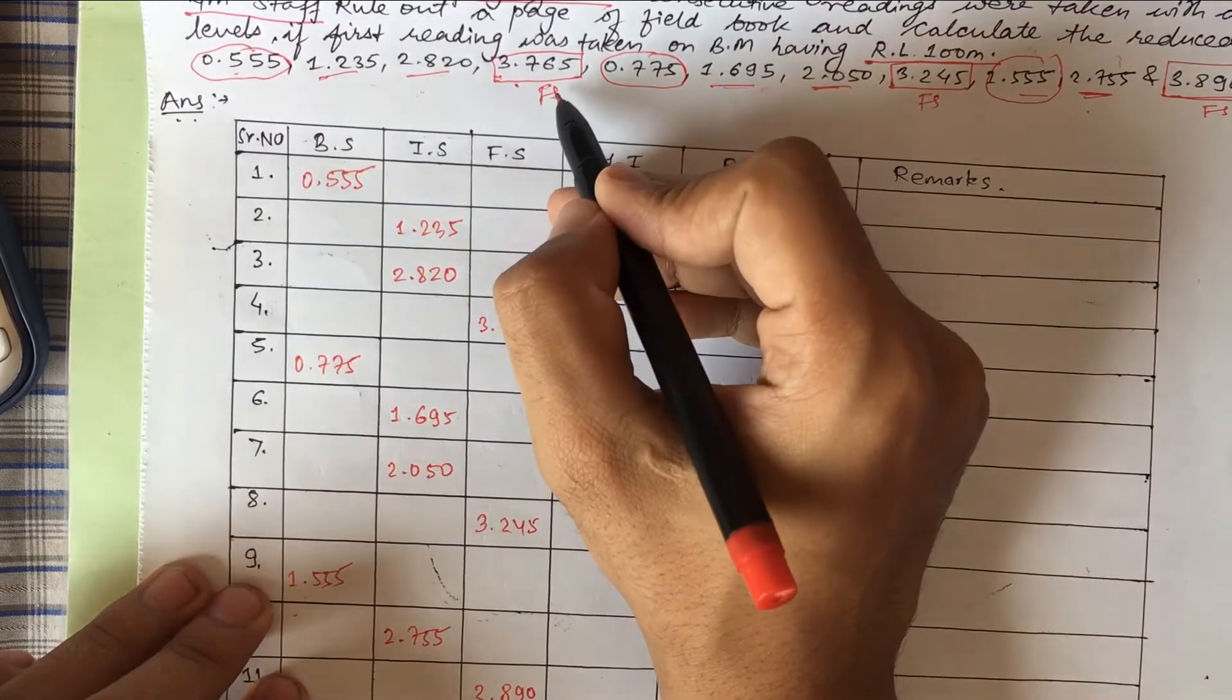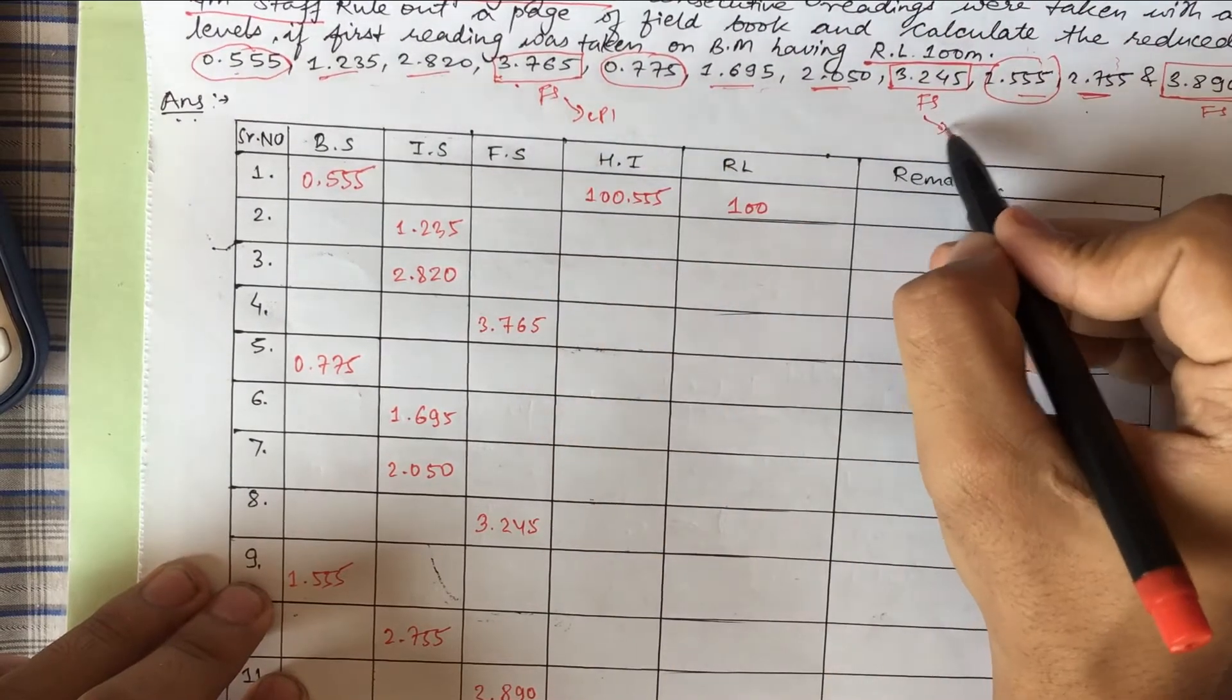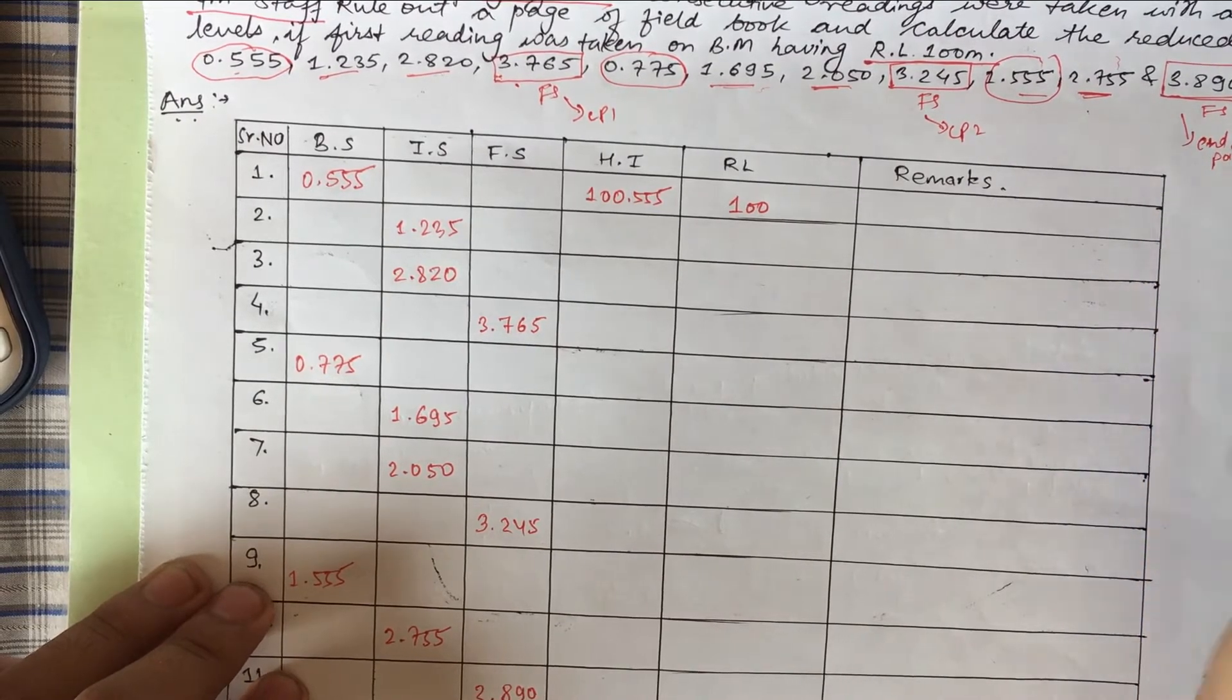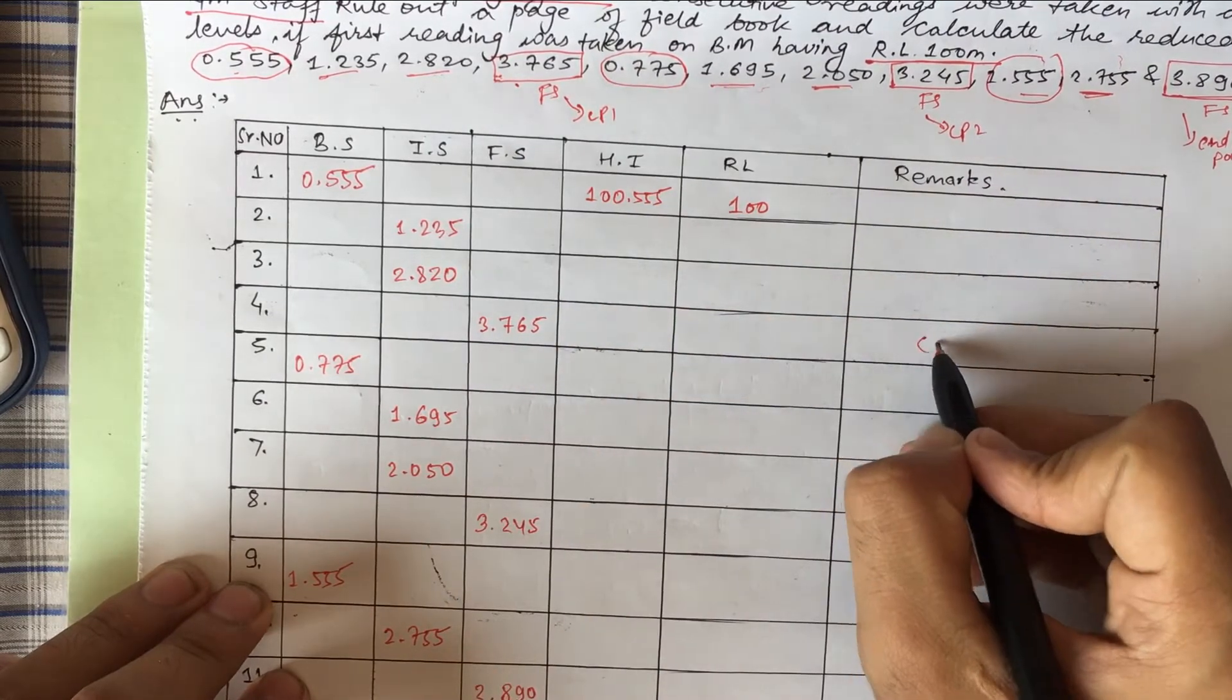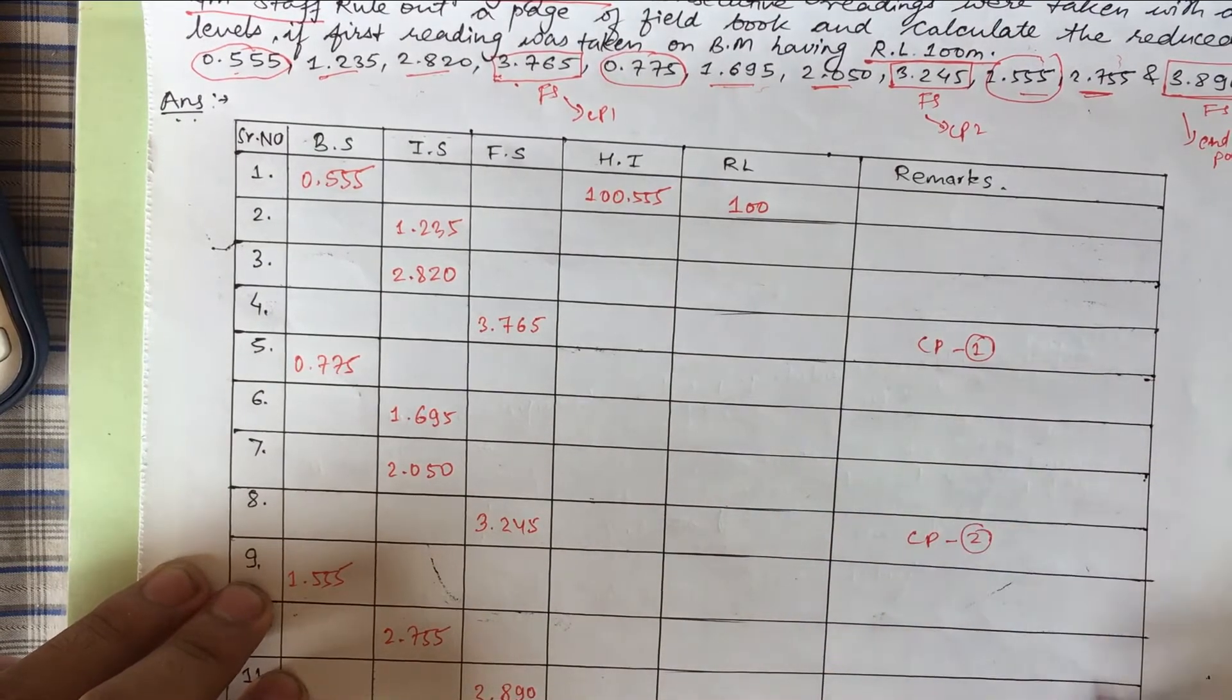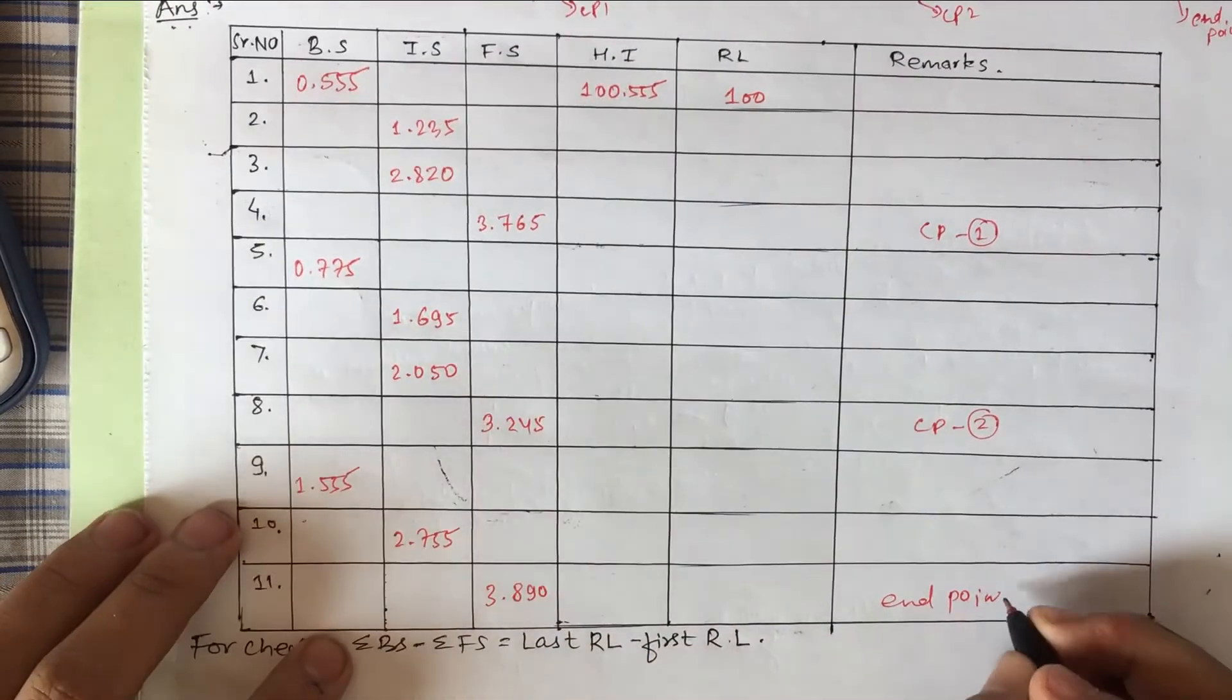This 3.765 is one change point. This is another change point. This is our third change point, an in-point. Let's write what are our change points. This one is change point one. This is change point two, and this is our in-point.